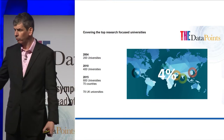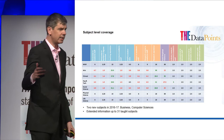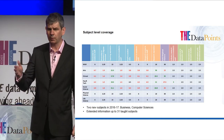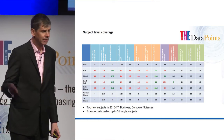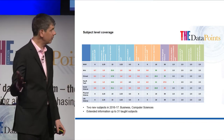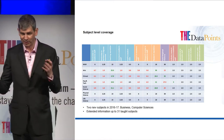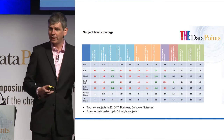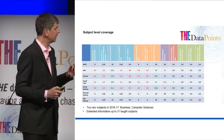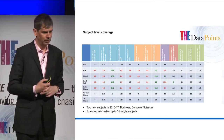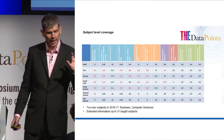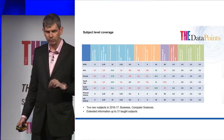As well as gathering data at the overall university level, we also look at data in what we call broad subject categories. Up until this year we had six: physical sciences, life sciences, clinical and health, arts and humanities, engineering and technology, and social sciences. This year we'll be expanding that by splitting social sciences to have a separate business and economics section, and also splitting computer science out of engineering and technology. We're the only rankings provider that has that depth of detail.